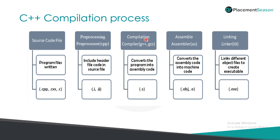In the compilation stage this source code gets converted into the assembly code and the assembler converts it into the machine code that is understandable by the computer. Finally in the linking stage the linker links the different object files to create an executable file that helps in getting the desired output.